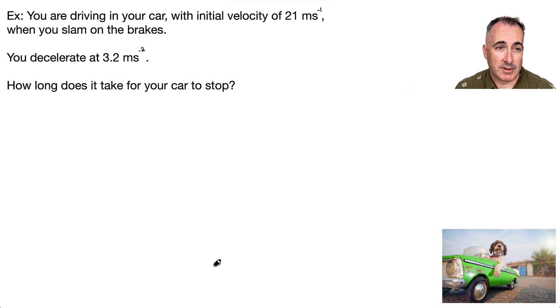So let's do an example. Here you're driving in your car with an initial velocity of 21 meters per second, and you slam on the brakes. What does that mean? Well, that means you put your foot on the brake pedal. What that means is you slow down. So we're going to say you decelerate at 3.2 meters per second squared. And the question is, how long does it take for your car to stop? So what are we asking? What are we looking for? How long does it take? That's T. That's what I want.